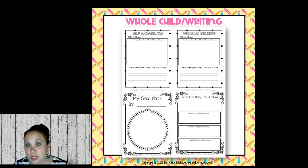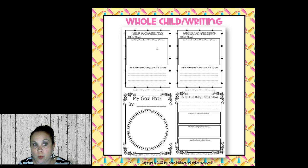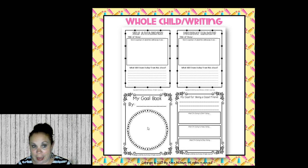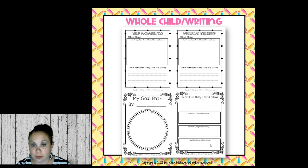For whole child writing during morning meetings, I love using a whole child journal with interactive notebook pages. We have templates for self-awareness and decision making — students write the title of the story read, draw a picture of what the skill means to them, and write sentences about what they learned. I also have a goal book where they draw themselves on the cover and write goals for being a good friend, including what they'll start doing, keep doing, and stop doing. There are also goal-setting pages for math, writing, and reading.